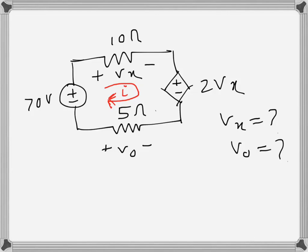So once we travel this way, 70 volts is a rise, so that is negative. We are writing the KVL in this loop, and then vx, which is a positive drop.